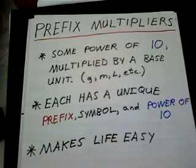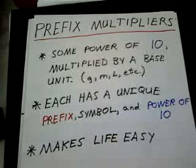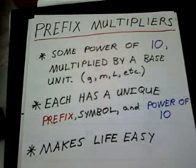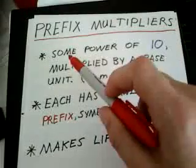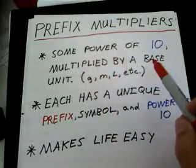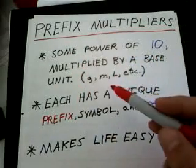What's up everybody. In this video we're going to talk about prefix multipliers. Basically, odds are you've worked with prefix multipliers before - everybody's dealt with them at some point. A prefix multiplier is some power of 10 multiplied by a base unit. Now that base unit could be grams, meters, liters, whatever, as long as it's a metric unit.